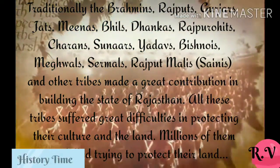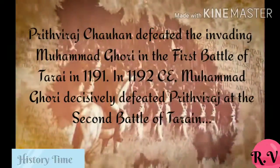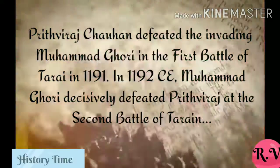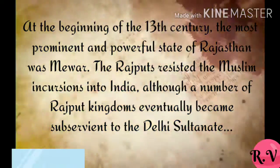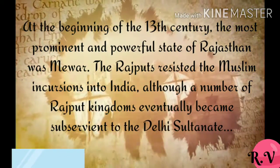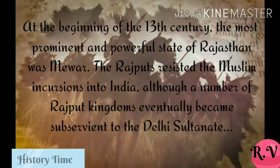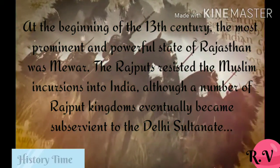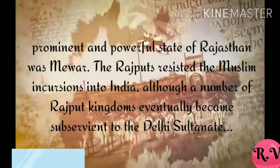All these tribes suffered great difficulties in protecting their land. Prithviraj Chauhan defeated the invading Mohammed Ghori in the first battle of Tarain. Mohammed Ghori decisively defeated Prithviraj Chauhan at the second battle of Tarain. At the beginning of the 13th century, the most prominent and powerful state of Rajasthan was Mewar. Rajputs resisted the Muslim incursions into India, although a number of Rajput kingdoms eventually became subservient to the Delhi Sultanate.